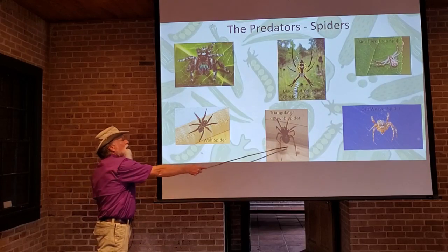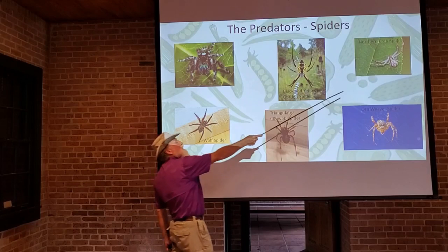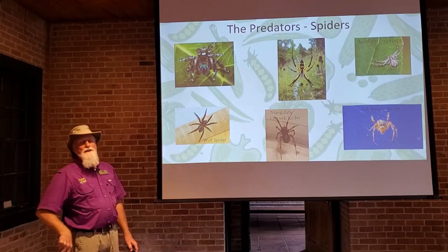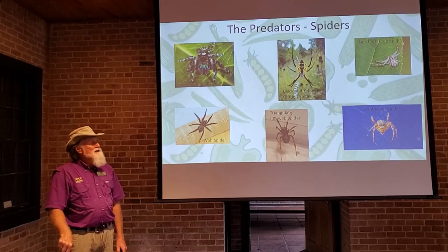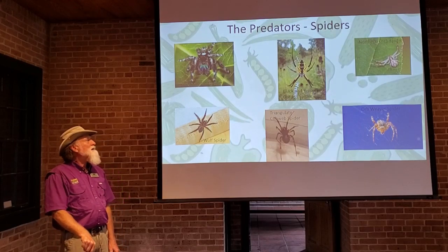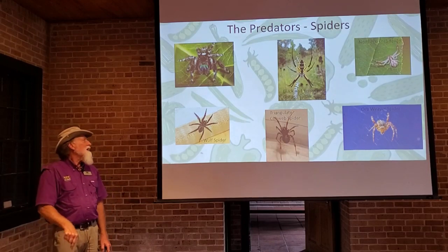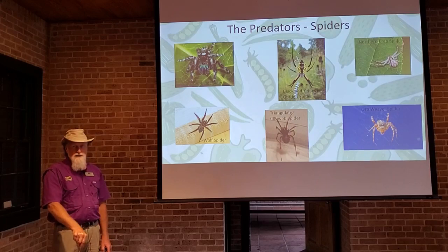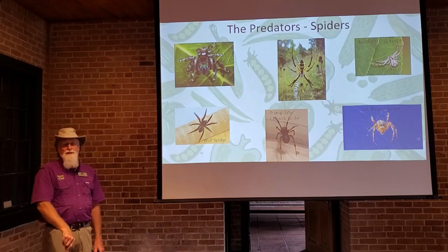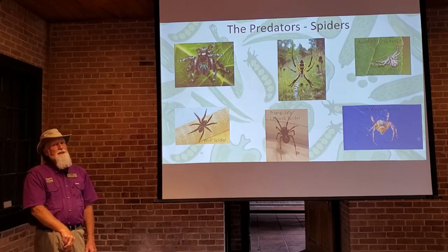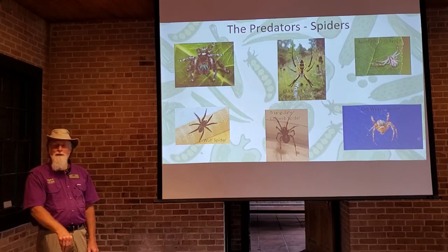The crab spider is another one you'll see in your garden — if you didn't know it was a spider, you might guess it was a crab, which is obviously how they got their name. Wolf spiders are hunters; you'll often see these in the house as well. They can be quite large with very hairy legs — they scare a lot of people, but these are good guys and nothing to worry about.